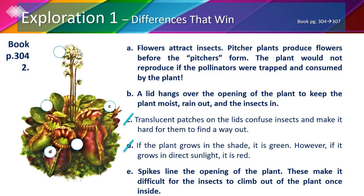Pause the video here if you would like to think about the answers on your own, then unpause to continue. Flowers attract insects, so A goes next to the flowers. The lid hangs over the opening, so B goes next to the opening of the pitcher. And finally, spikes line the opening making it difficult for insects to climb out, so E goes where the spikes are shown.